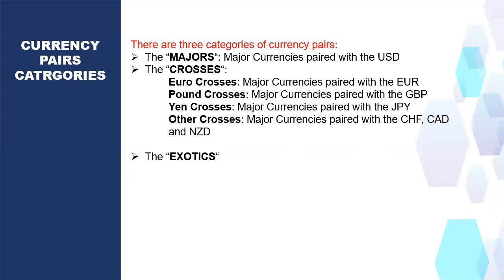The Majors are the major currencies — those eight we talked about in the previous slide. When you pair any of them with the US dollar, it becomes a major currency pair. So a major currency pair is a major currency paired with the US dollar — those are called the Majors.